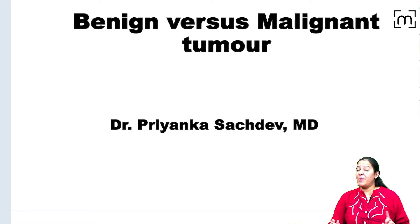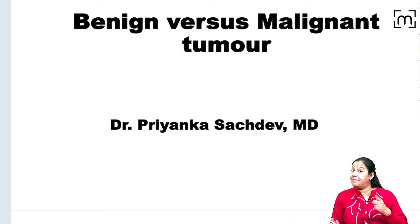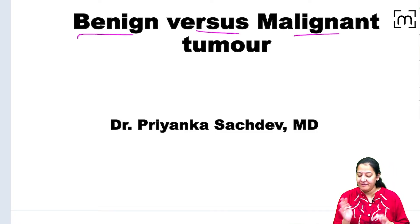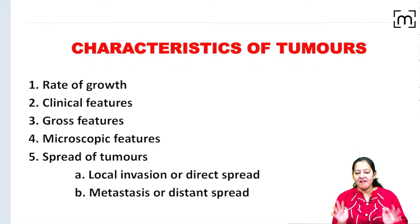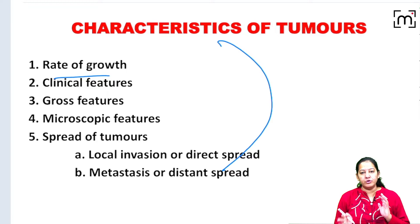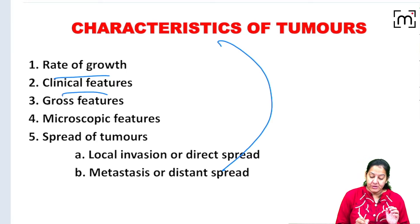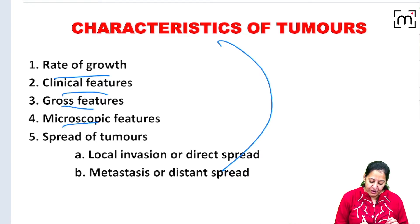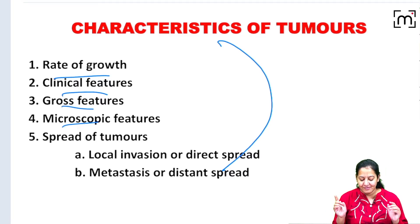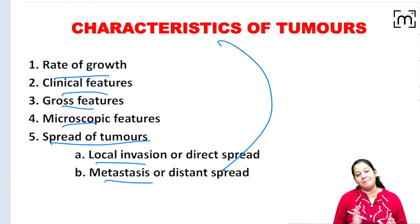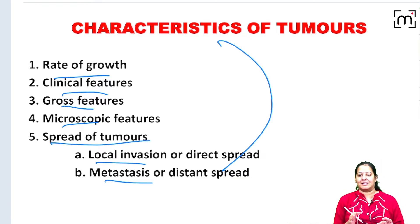Hello everyone. In this video I am going to discuss the differences between benign versus malignant tumour. I will be discussing the differences under five criteria: rate of growth, clinical features, gross and microscopic findings, and most importantly the spread of tumours — including local spread and distant spread, that is metastasis.